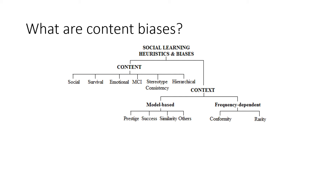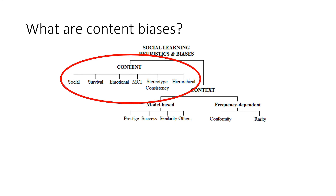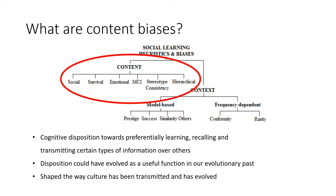Or on the other hand, we might be more likely to copy behaviour or learn information that we perceive to be rare. For this lecture, we'll be focusing on content biases. Content biases refer to a cognitive disposition towards preferentially learning, recalling and transmitting certain types of information over equivalent others. These dispositions may have evolved as a useful function in our evolutionary past, and are likely to have shaped the way culture has been transmitted and has evolved. There's a range of these different content biases, but today we'll be focusing on social information content bias, as this is the one that's particularly relevant to soap operas and social dramas.